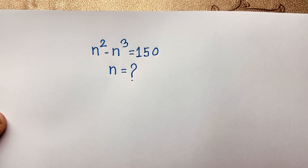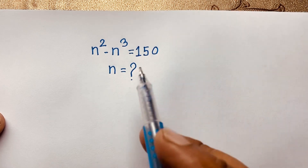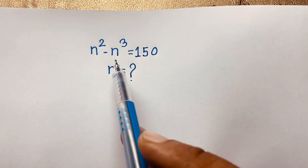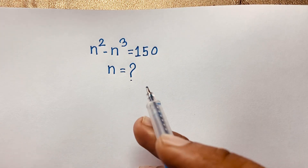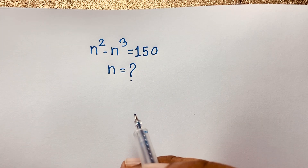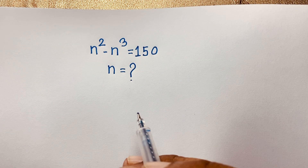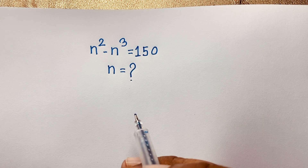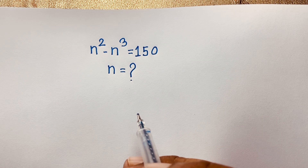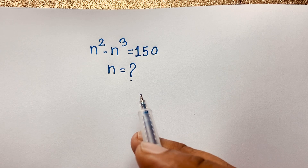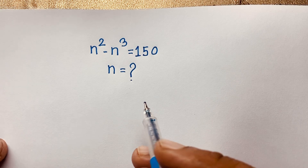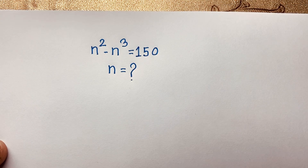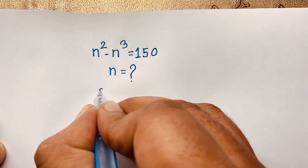Hello everyone. In this video we have solved a nice cubic equation: n squared minus n to the power 3 is equal to 150. We have found out what is the value of n in this exponential math equation. So let's start the solution.